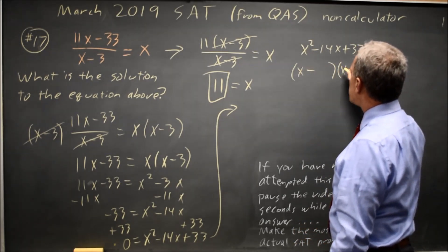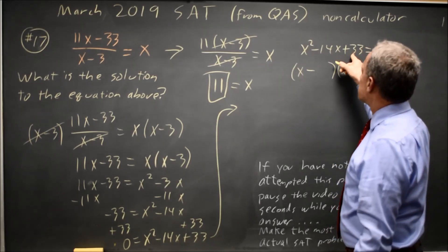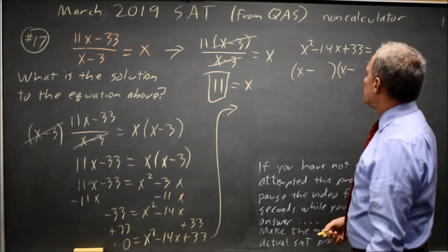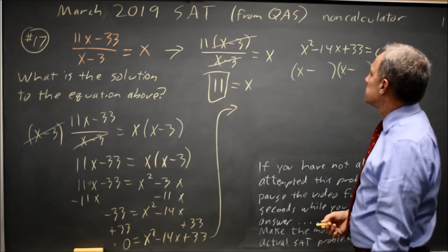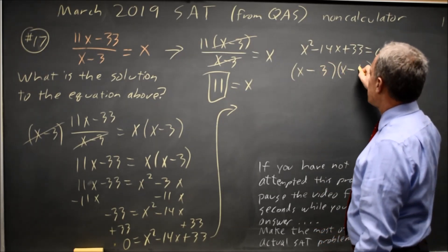My factors start with x. They're both minus because the final constant is positive and the middle term is negative. I need two numbers where the product is 33 and their sum is 14, so that would be 3 and 11.